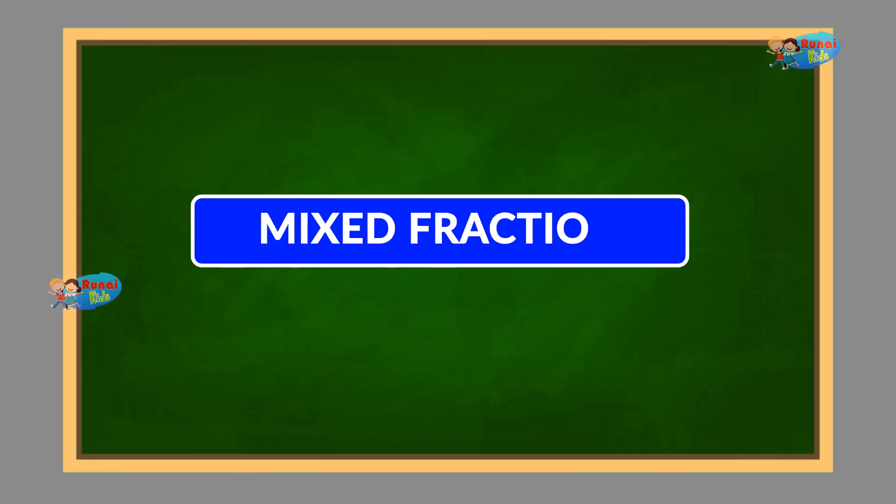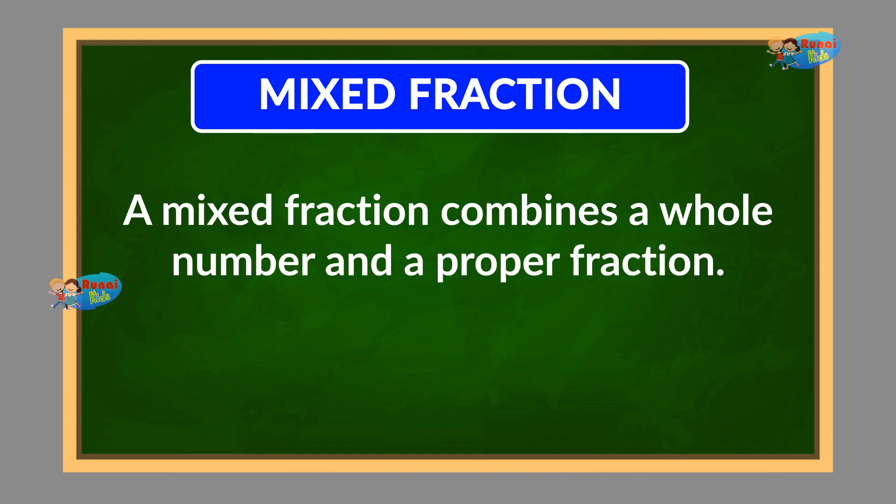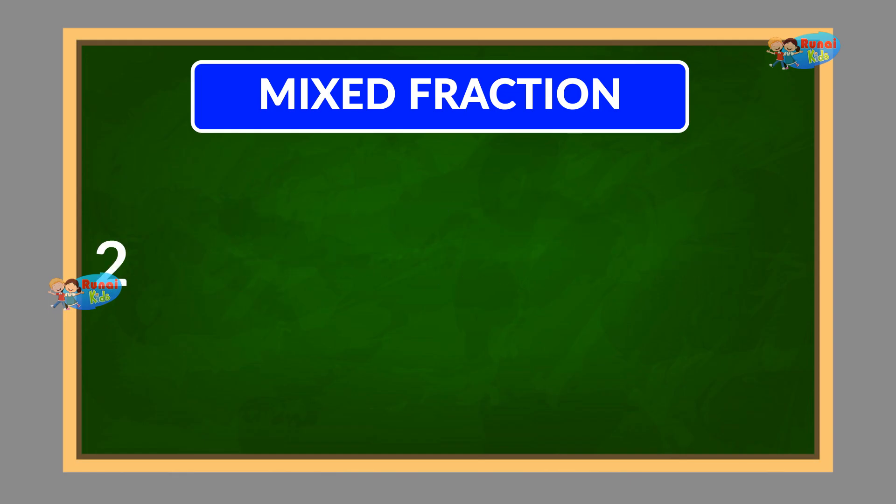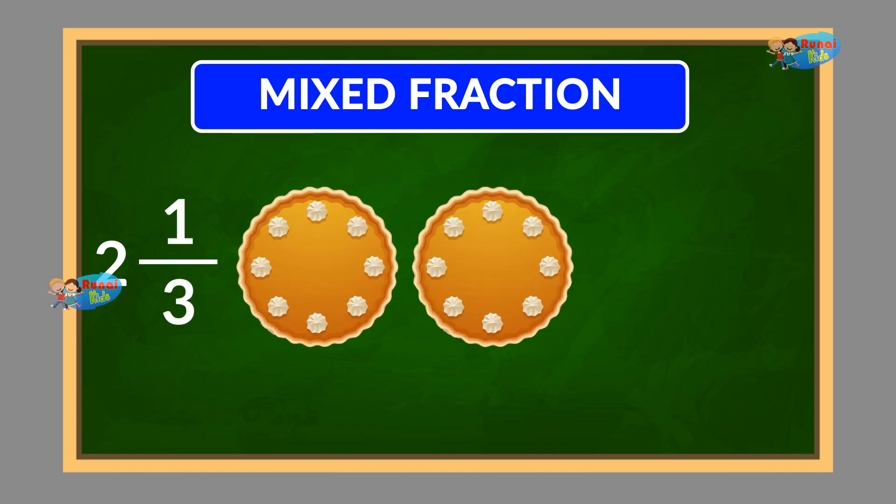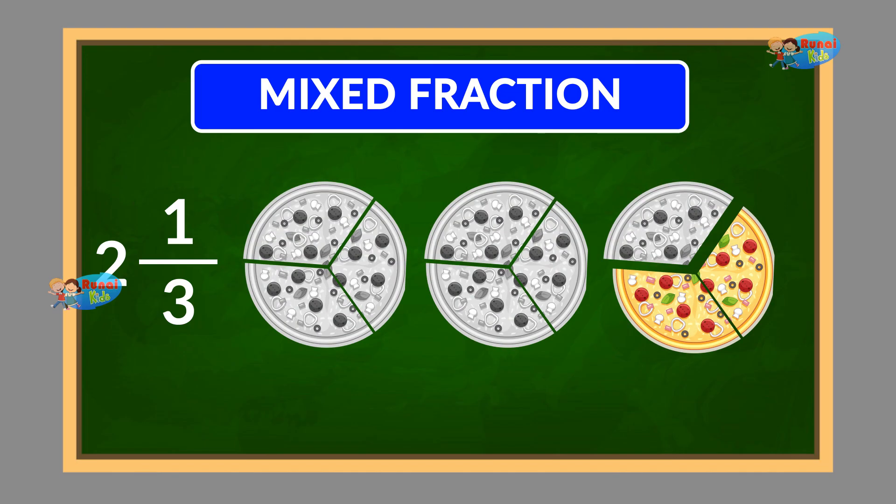Mixed fraction: A mixed fraction combines a whole number and a proper fraction. For example, 2 whole 1 by 3 means 2 whole units plus 1 by 3 of another unit. It's often used to make improper fractions easier to understand, like saying 2 and 1 by 3 pizzas instead of 7 by 3.